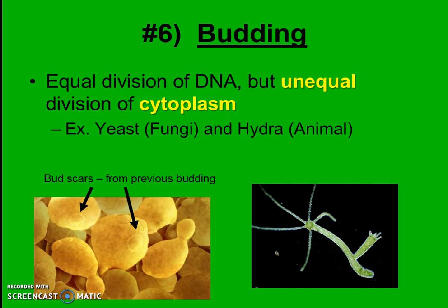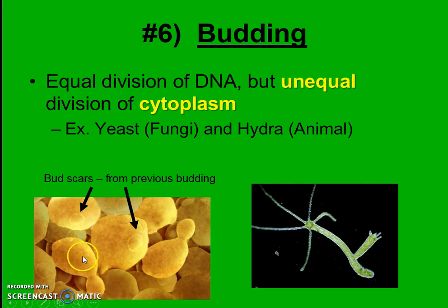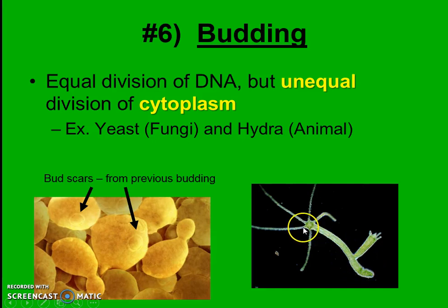Lastly, some organisms can do the process of budding, which is the equal division of the DNA but the unequal division of the cytoplasm. Here we can see yeast — like we use for our bread-baking project — beginning to look almost like bowling pins, with this smaller top piece, that unequal component of the cytoplasm, beginning to form an identical clone of its bigger parent piece. You can see some other pieces forming from previous buddings. An identical clone essentially begins to form off the side of the mother. This can happen in even simpler creatures like sponges. Here we can see a baby identical version forming off the mother, which will eventually pop off.